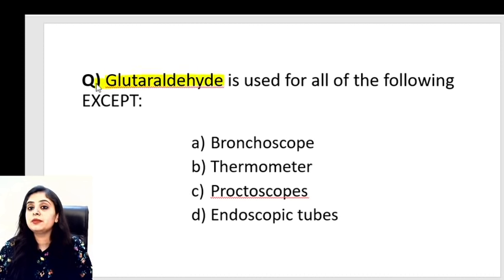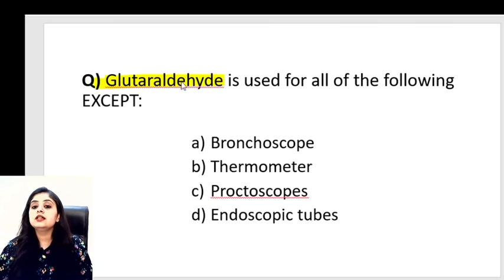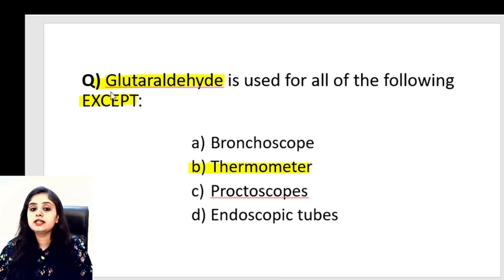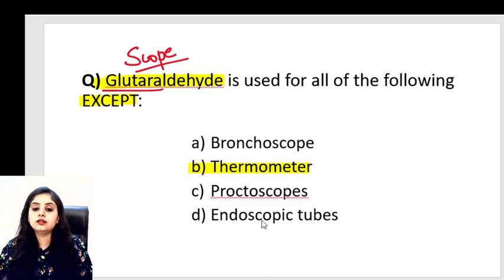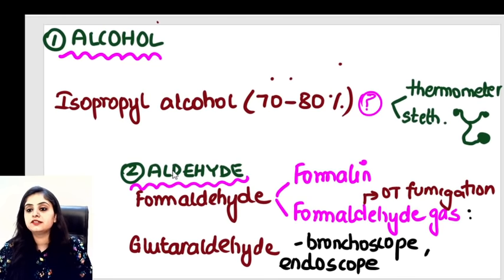Now we enter chemical methods. The first MCQ: Glutaraldehyde is used for all of the following EXCEPT? Options: bronchoscopes, proctoscopes, endoscopes, or thermometer? Glutaraldehyde — commercially known as Cidex — is used for all kinds of scopes: bronchoscope, laryngoscope, endoscope, proctoscope, colonoscope. It is NOT used for thermometers. So the answer is thermometer.